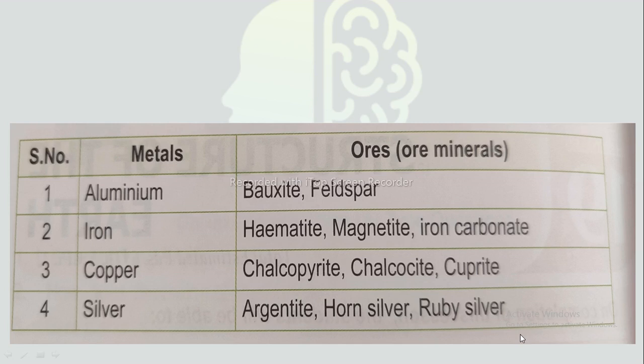Here are some metals with their respective ores: Aluminium — ores are bauxite, feldspar, etc. Iron — ores are hematite, magnetite, iron carbonate, etc. Copper — ores are chalcopyrite, chalcocite, cuprite, etc. Silver — ores are argentite, ruby silver, etc.